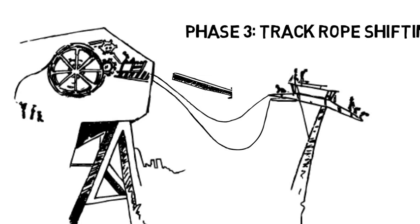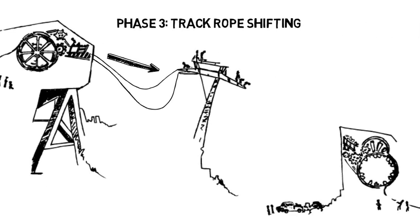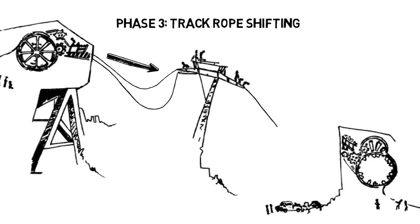Next, crews will reset plate clamps at both ends. To reset the clamps, they'll torque and inspect 24 bolts 100 feet away from the terminal. Then, the process starts over for the next rope.